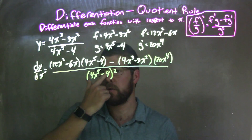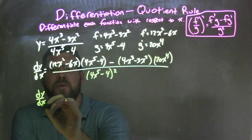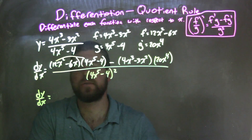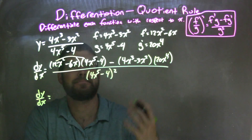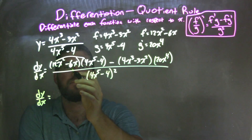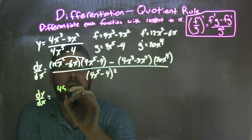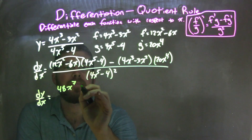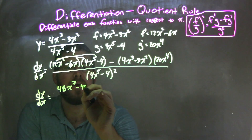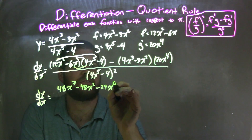A lot written out here, so now I need to distribute all parts up there. So dy/dx: 12 times 4 is 48 — we add the exponents, 7th power — and 12 times 4 again gives a negative 48x squared. Negative 6 times 4 is negative 24, we add the exponents, x to the sixth power.